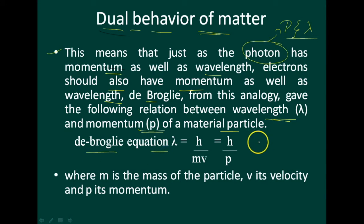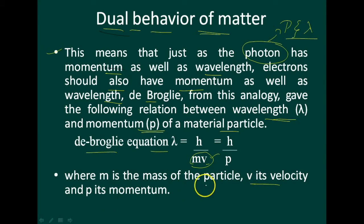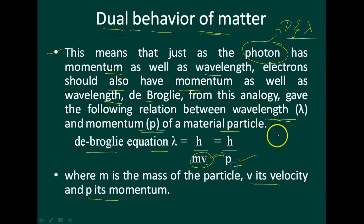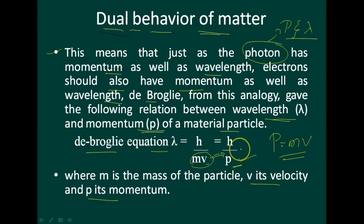The De Broglie equation: lambda is equal to h divided by mv, where m is the mass and v is the velocity. This can be written as h/p, where p is called momentum and p is equal to mv. This is about dual behavior of matter.